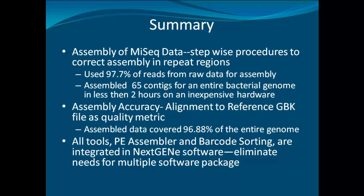To improve assembly in repeat and non-overlap regions, NextGene Stepwise Assembly takes three steps to ensure accurate contig assembly. The assembly of the bacteria data for E. coli M655 used 97.7% of the PE data for assembly and formed 65 contigs in under two hours. The assembled contigs were then aligned to the reference .gbk file as a control metric, and approximately 96.88% of the bacteria genome was covered. All assembly, barcode, viewing, and reporting tools are integrated into NextGene for a complete software package that is accurate and saves time on analysis.